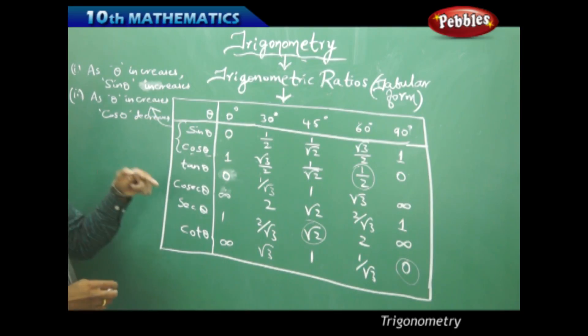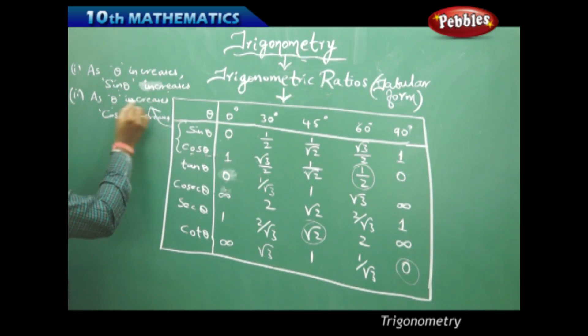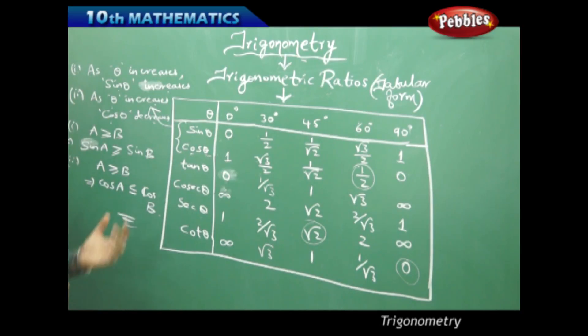Or when theta decreases, cos theta increases. That is they are inversely proportional. Mathematically for a greater than b implies sin a is greater than sin b, or when a is greater than or equal to b implies cos a is less than or equal to cos b. This is how I identify the increasing and decreasing concepts mathematically.